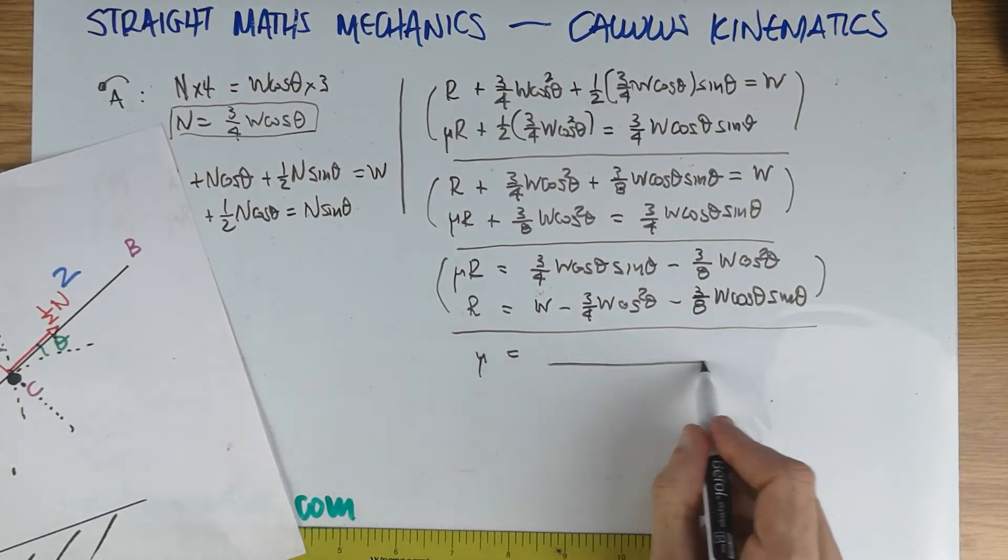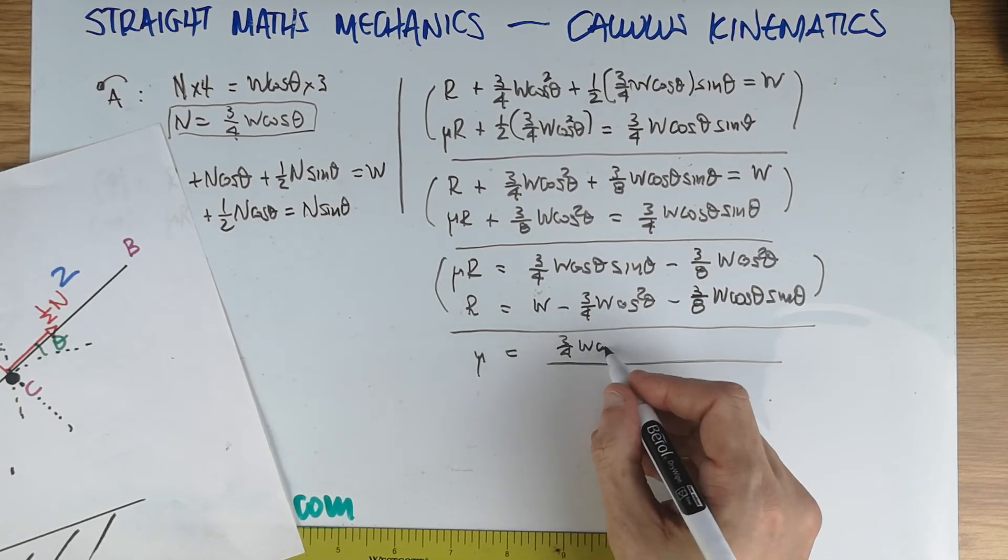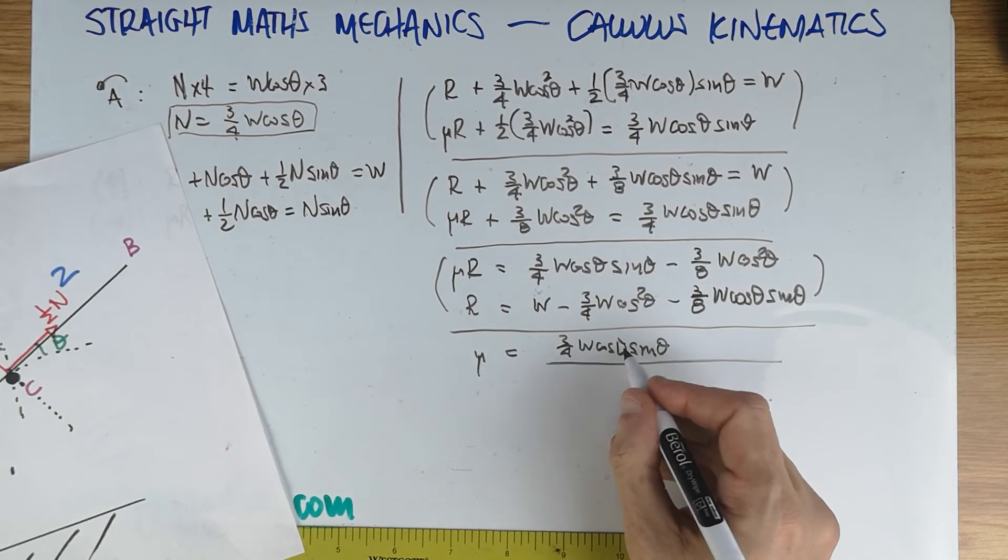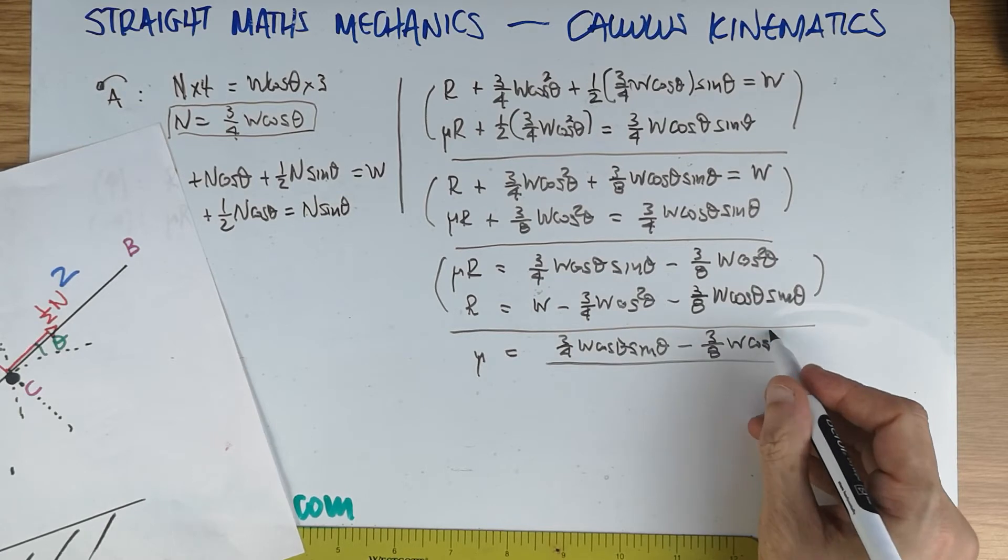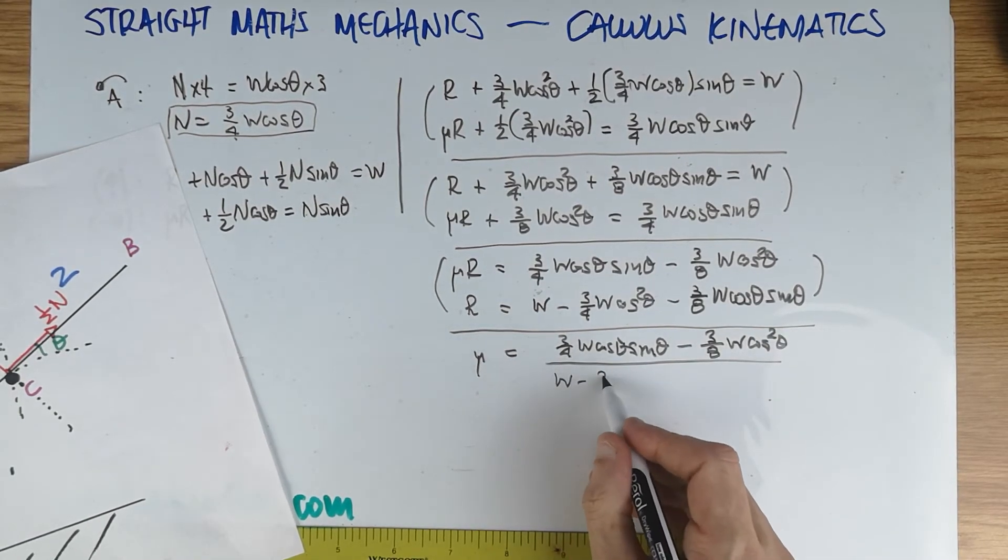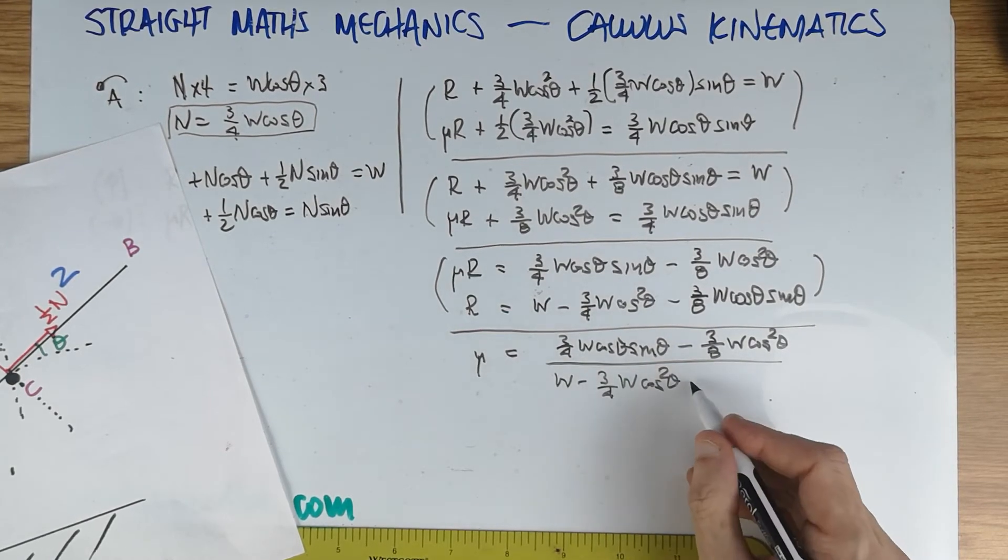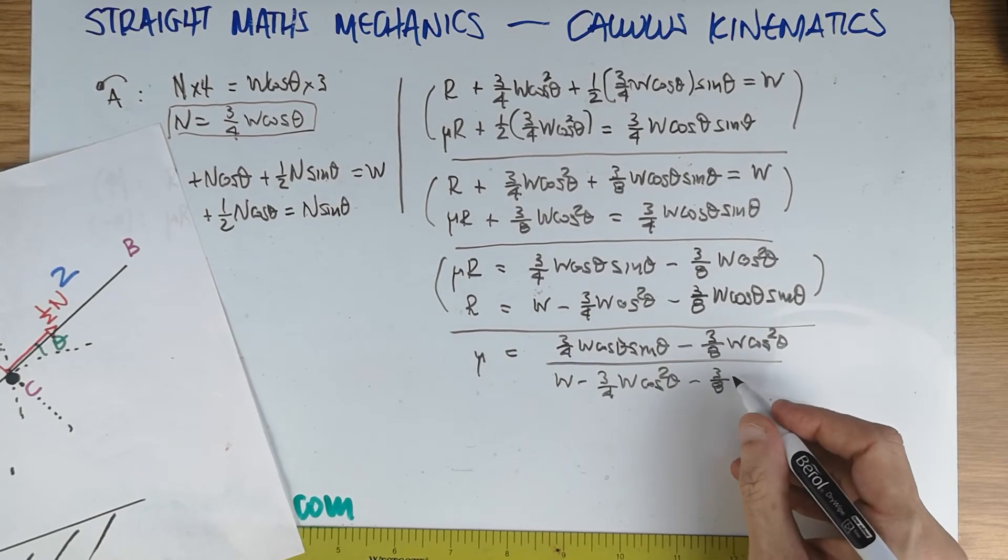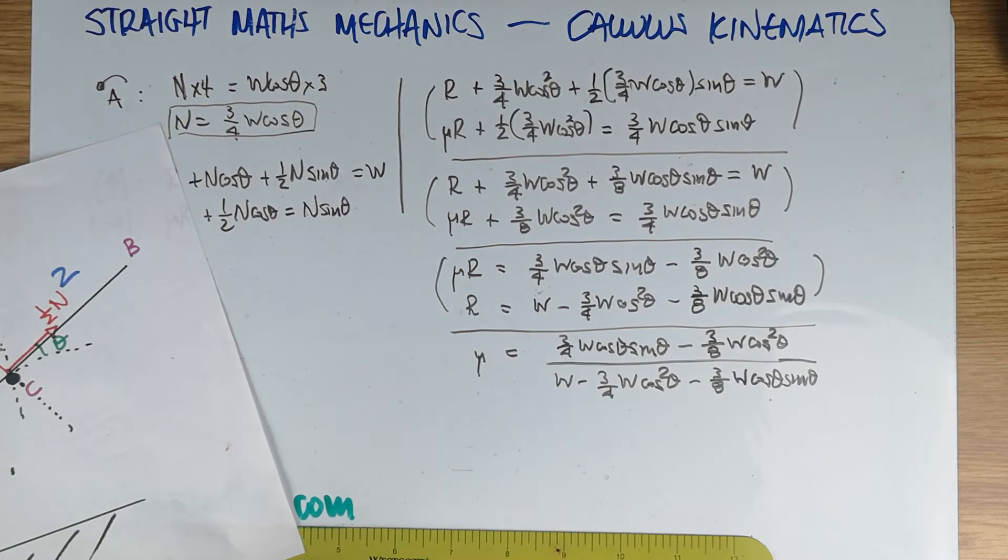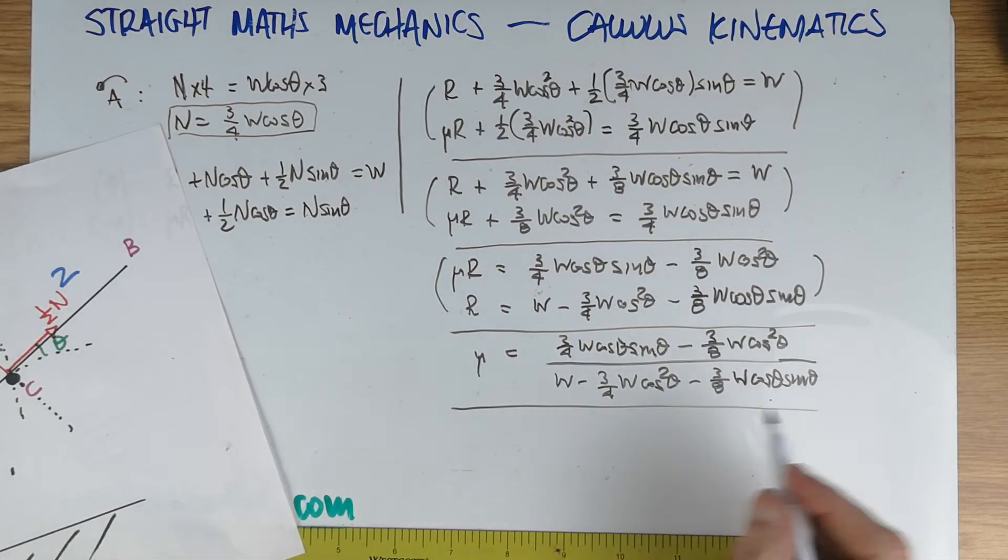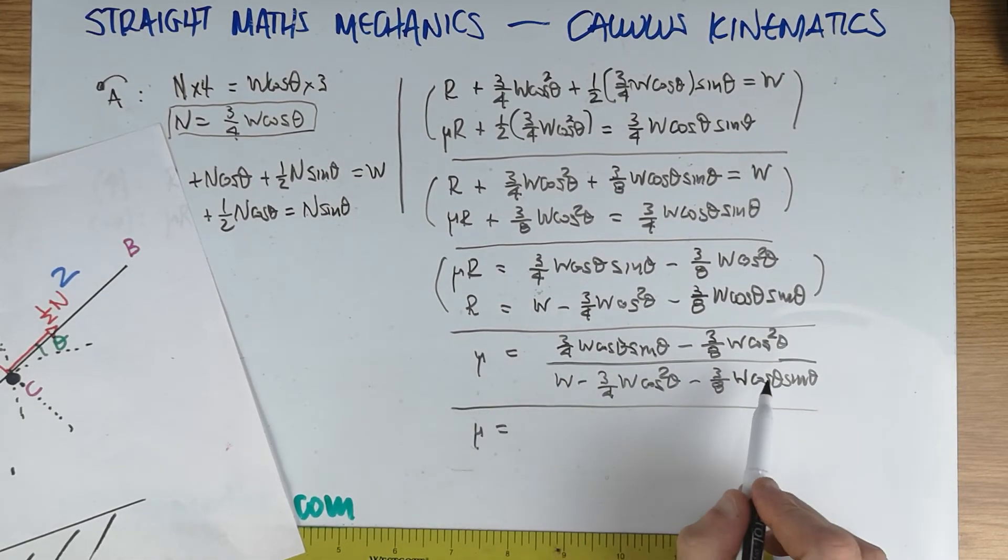I have just a μ left on the left-hand side, which is basically what I've got. And now, by having now a fraction, which I'm going to write three-quarters W cos θ sin θ minus three-eighths W cos squared θ divided by W minus three-quarters W cos squared θ minus three-eighths W cos θ sin θ, you can see what's going to happen to the Ws. It's a really nice way of dealing with this problem.